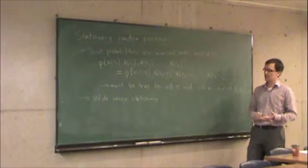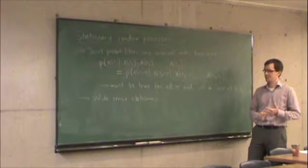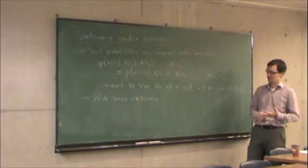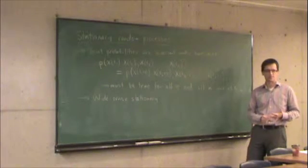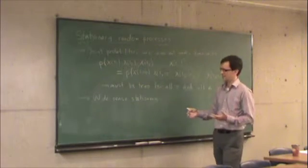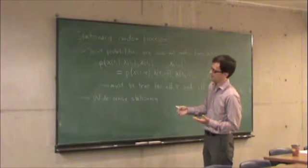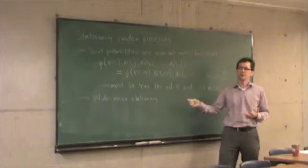All of this boils down to a theorem called the Wiener-Kinchine theorem. And the Wiener-Kinchine theorem basically tells you everything you need to know about what happens to random processes when you pass them through linear filters. And it turns out that the Wiener-Kinchine theorem requires this property, the wide sense stationary. So that's where we're going.